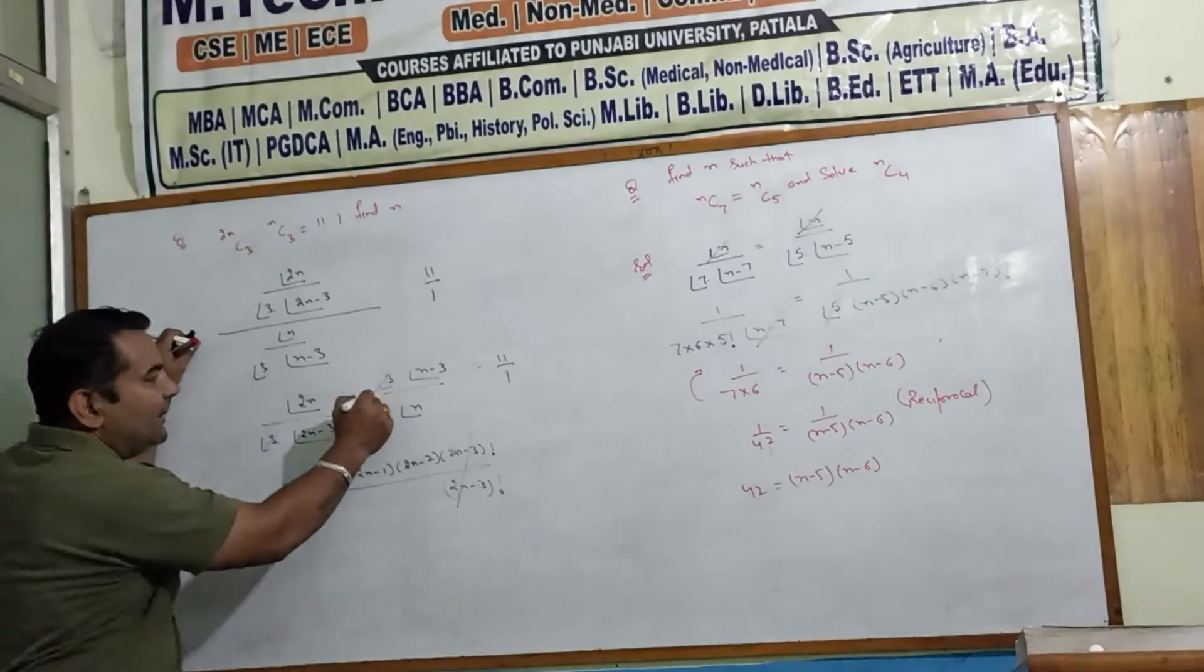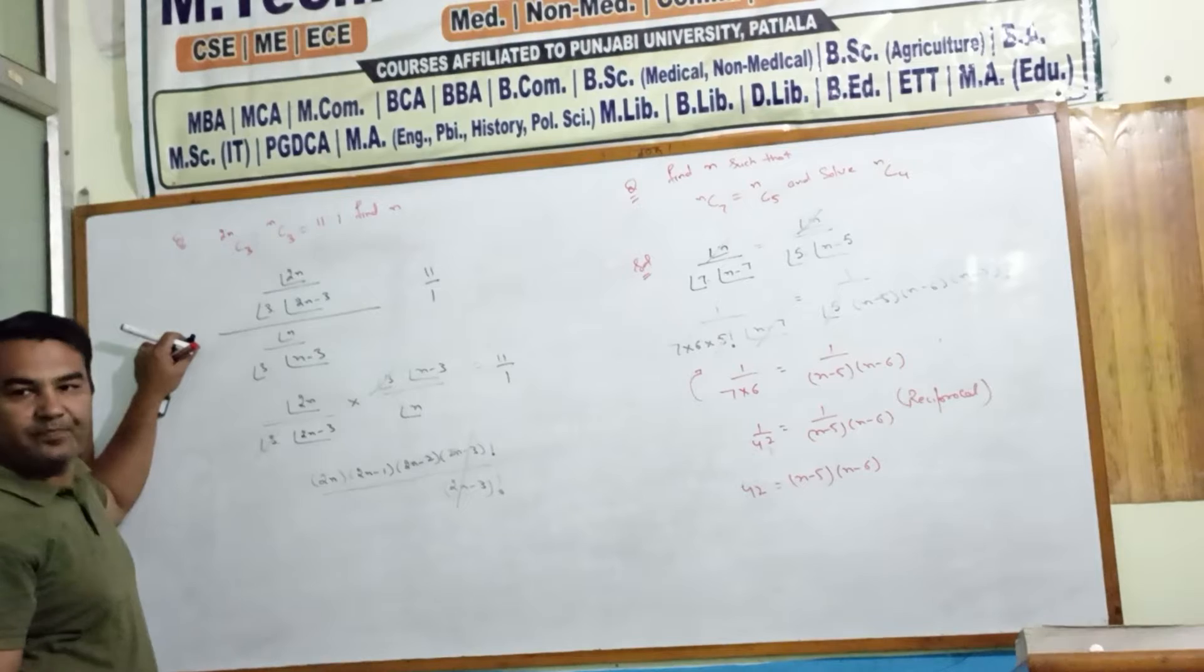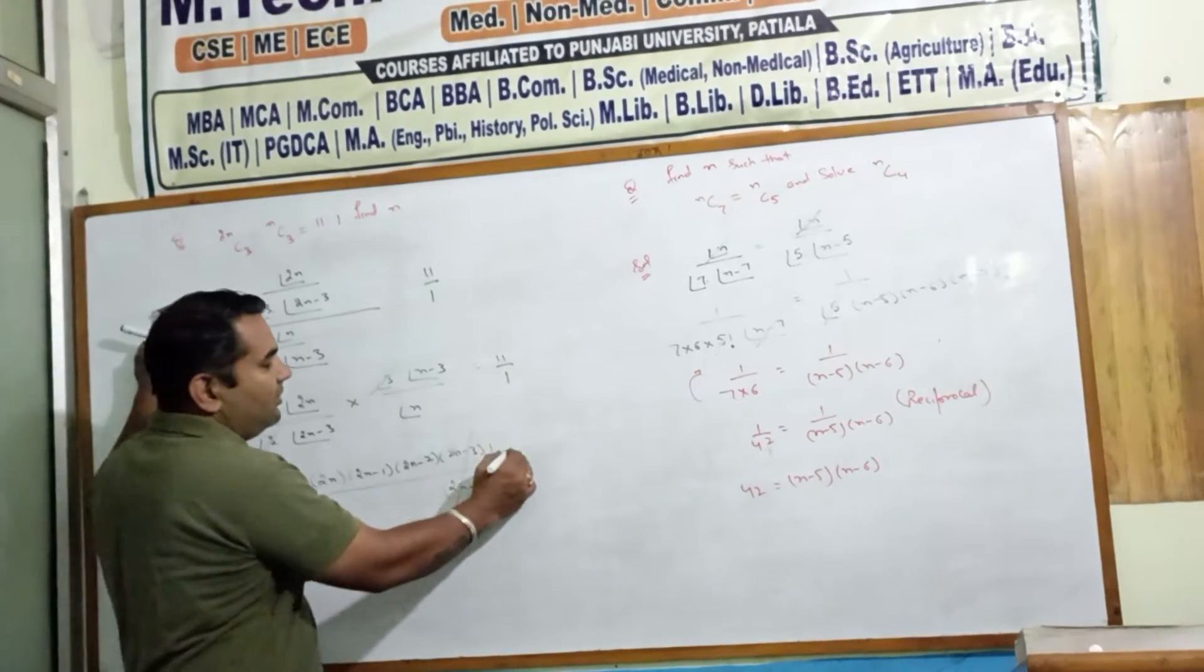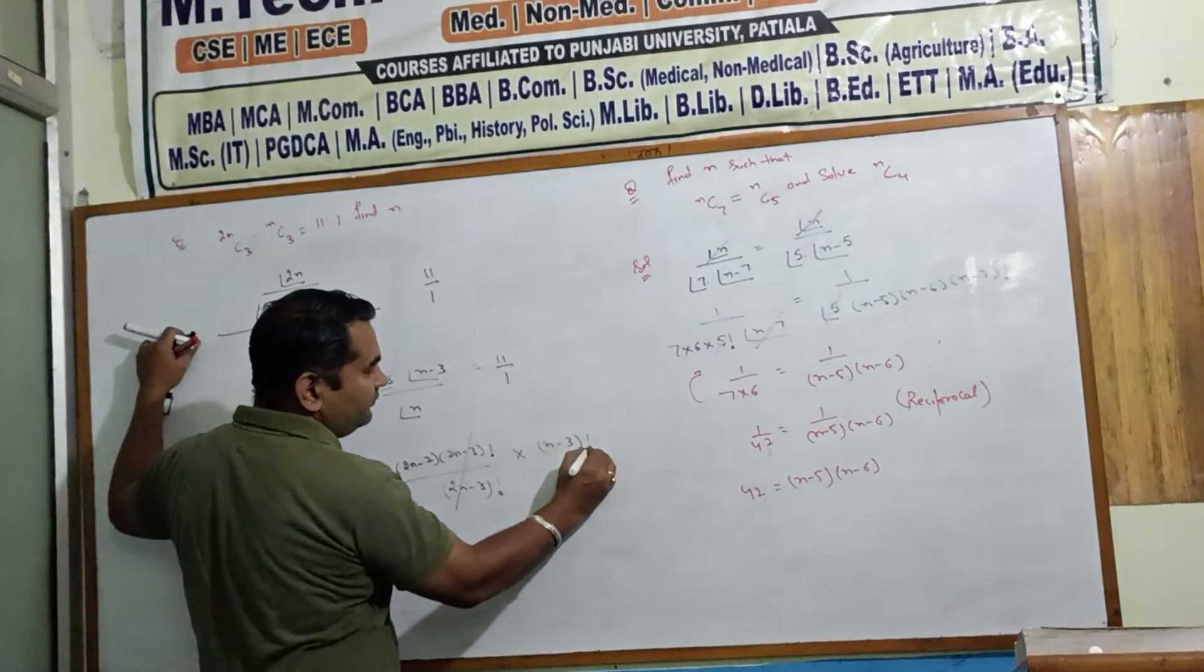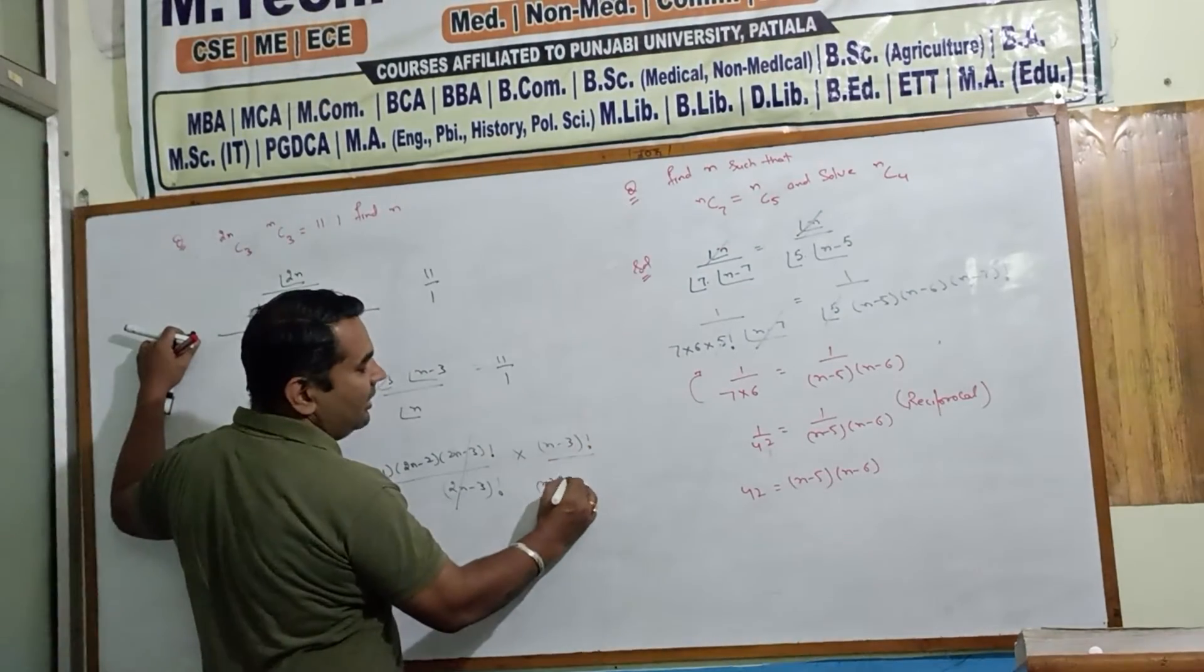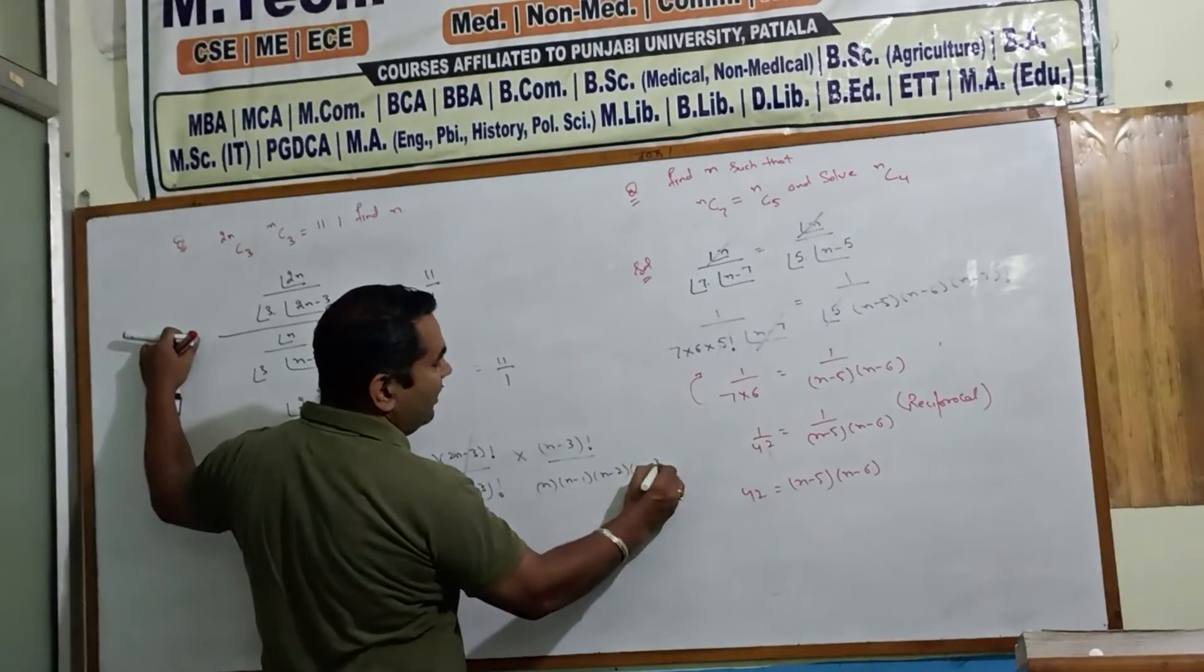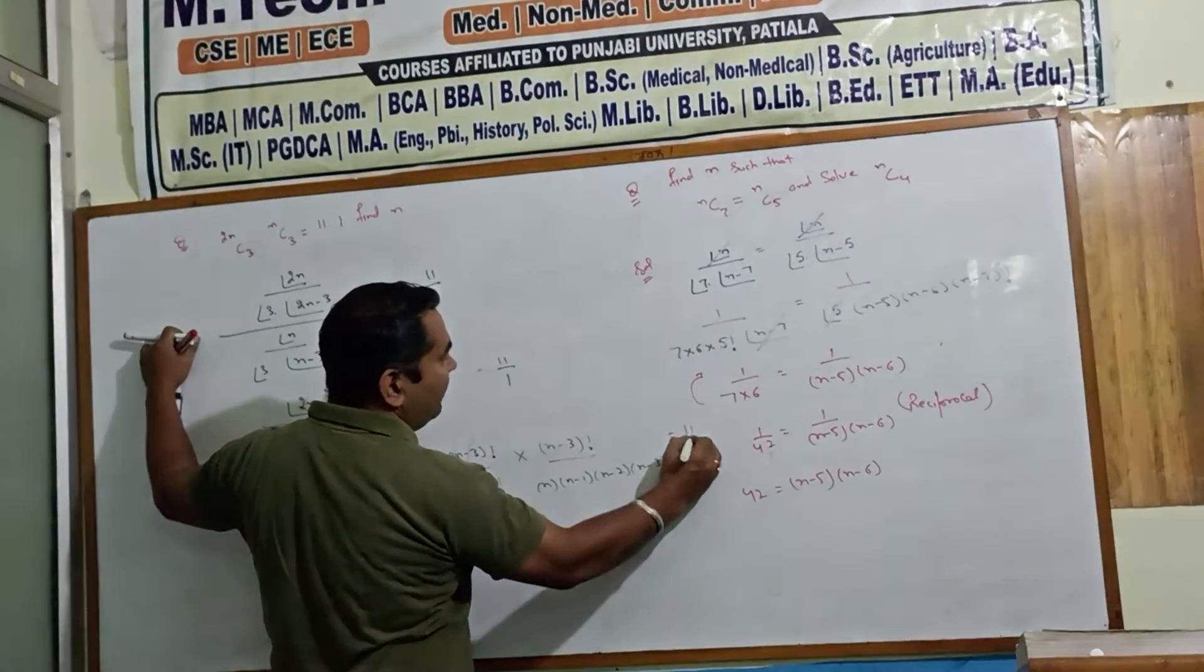3 factorial directly cancelled here, and minus 3 and minus 1 and minus 2 equals to 11 upon 1.